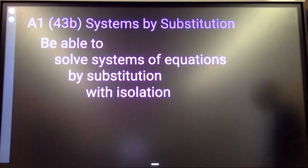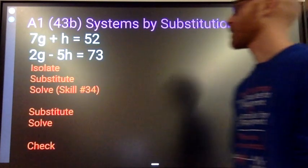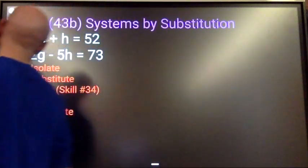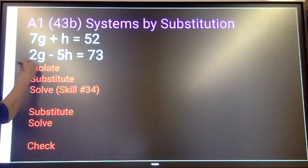Alright, part B. Second part of systems by substitution. Here we have the same kind of thing, but I didn't isolate any of the variables. So your first step is going to be: isolate a variable.